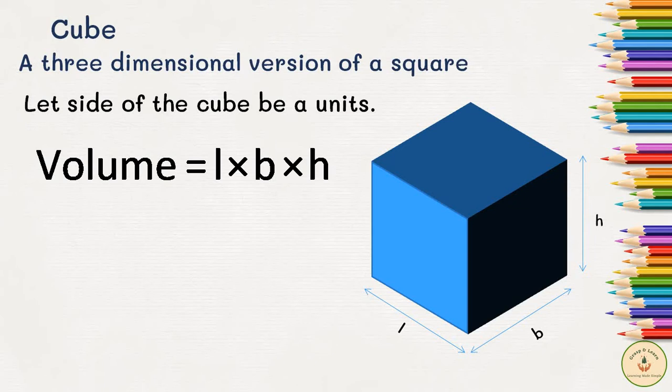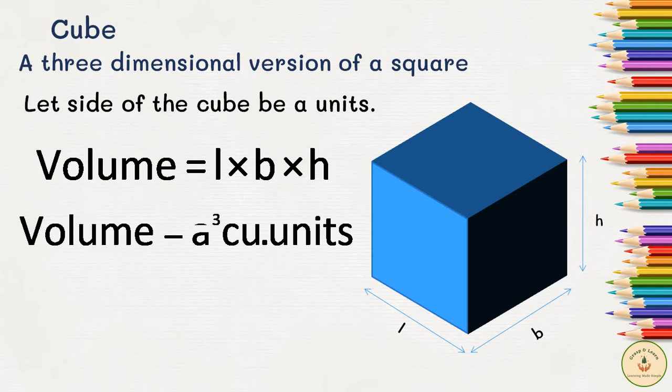Volume can be calculated by simply multiplying all the dimensions of the object. Since we are talking about the cube, all the dimensions are equal. We have three dimensions—length, breadth, and height—and all of them are equal. When we multiply them, we obtain a³ cubic units. Be very careful about the unit that is used. Since three quantities are multiplied, the unit becomes cubic units—meter, centimeter, or any other unit used in the problem.